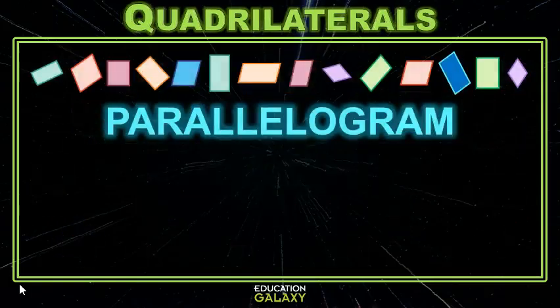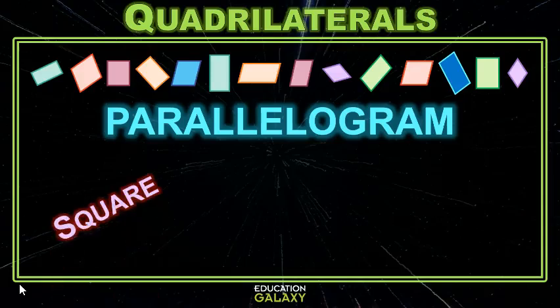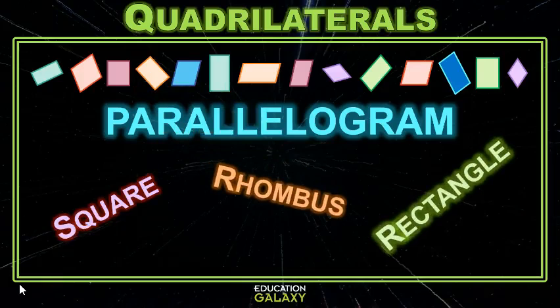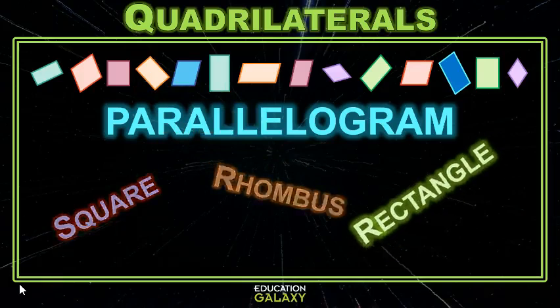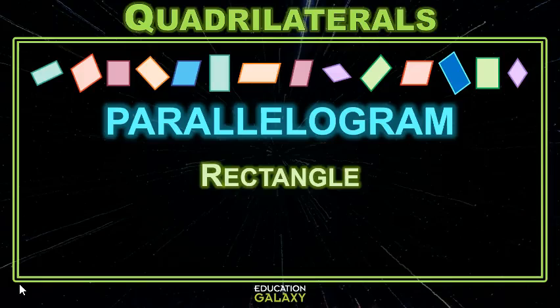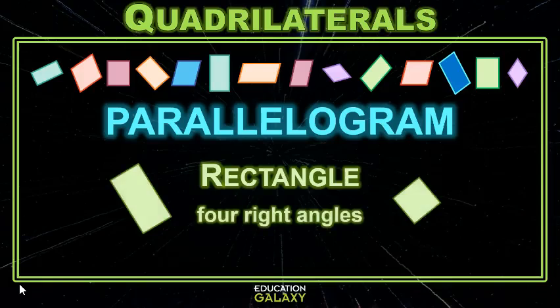Now, you've maybe met some of these parallelograms in your life, like squares and rhombuses and rectangles. Let's visit a little bit more about rectangles. What makes a rectangle so special? We know it's a parallelogram, we know it's a quadrilateral — so what's the big deal? It's about its angles. It has four right angles.